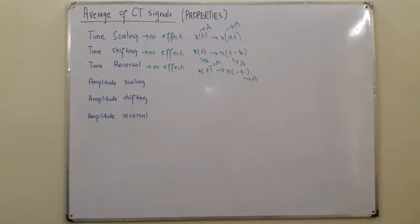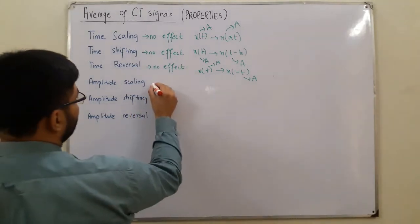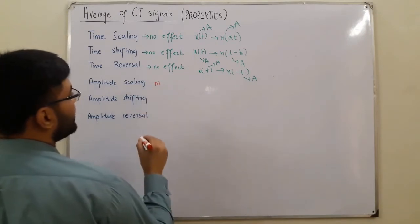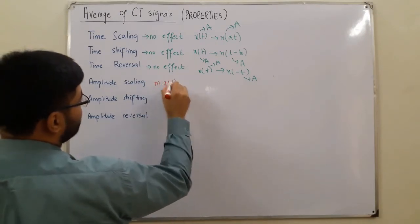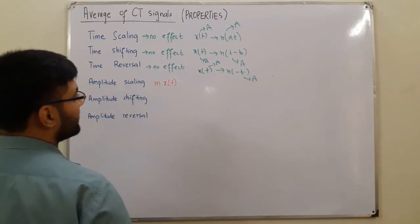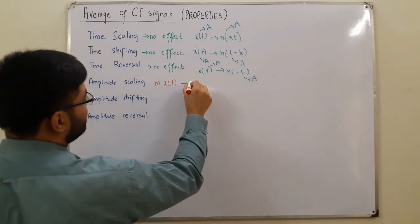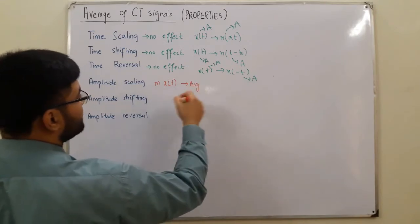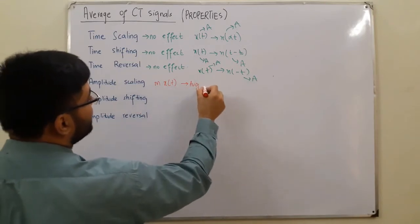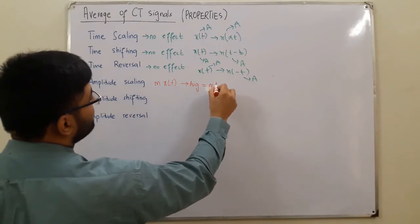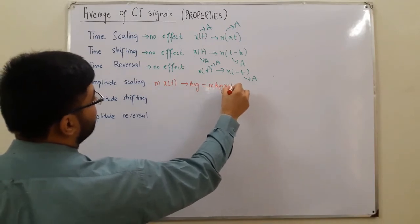Amplitude transformations do have an effect. The first is amplitude scaling — you multiply a real number m with the function's value x(t). The new average of m·x(t) would be equal to m times the average of x(t).